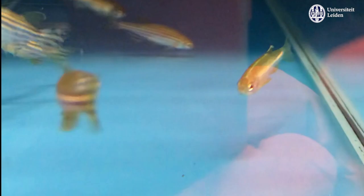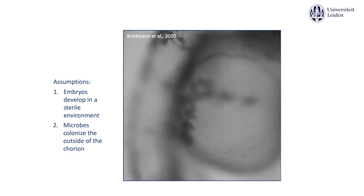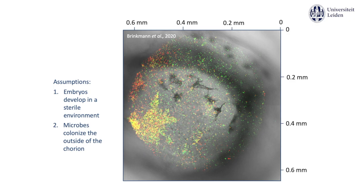We study this in the lab using larvae of the zebrafish. These larvae have been used for decades in acute toxicity tests and provide an additional advantage for microbiota research. This is because their embryos develop in a sterile environment and are protected by the chorion membrane. We are almost certain that microbes cannot cross the chorion and only colonize the outside of it.